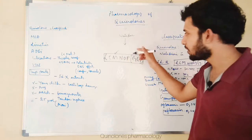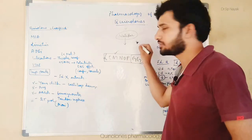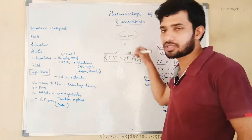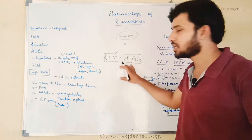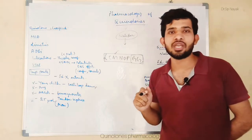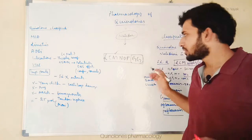We also have the quinolone that is nalidixic acid, and nalidixic acid comes at the top as the parent quinolone. So nalidixic acid is a quinolone and these others are fluoroquinolones. So this is the classification.